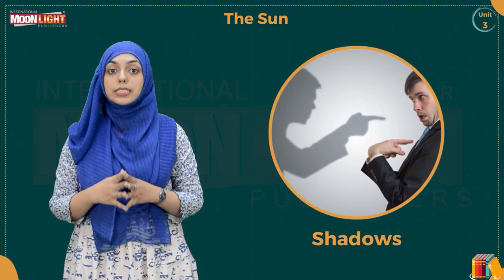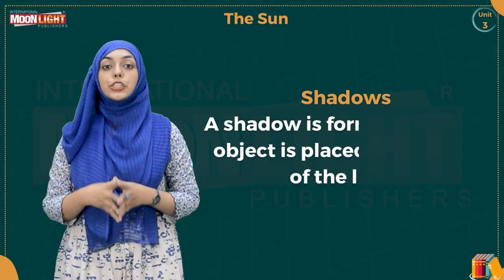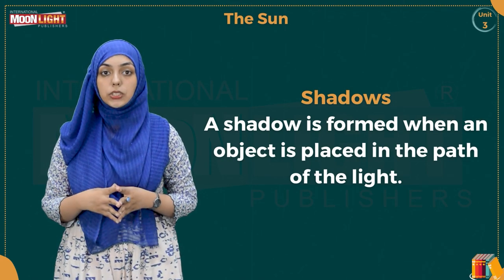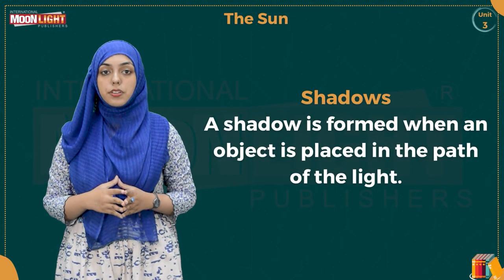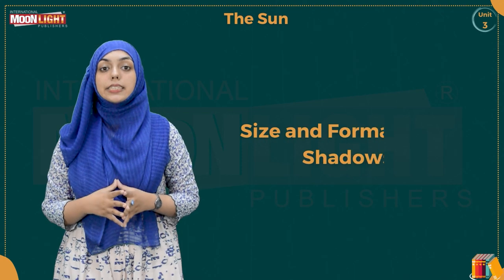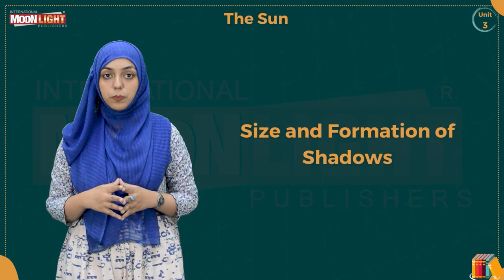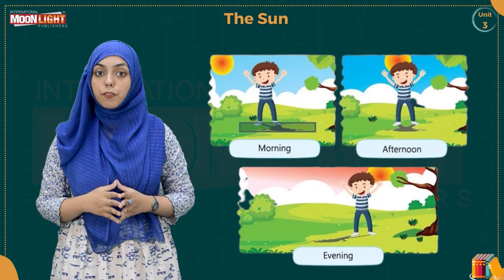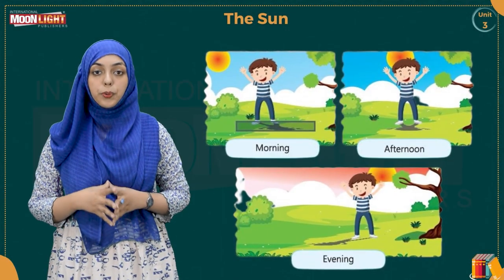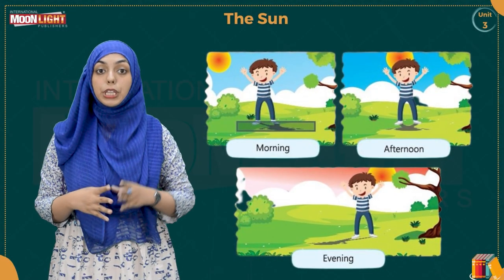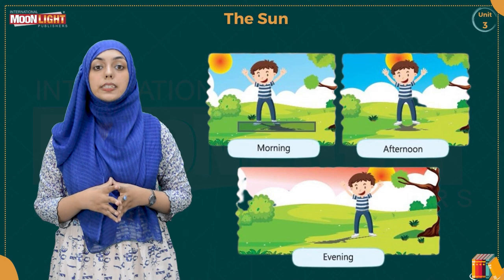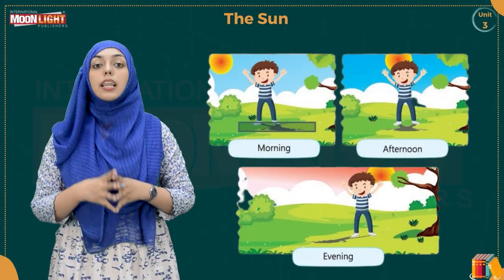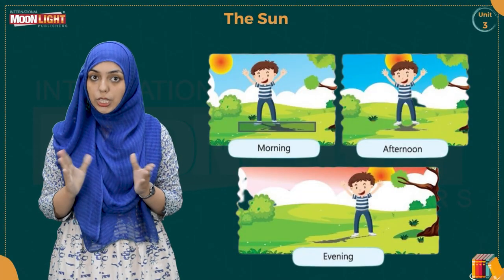I will tell you how a shadow is formed. A shadow is formed when an object is placed in the path of light. In this picture, Amjad is standing in front of the sun and his shadow is cast on the opposite side. When the sun changes its position, the length of the shadow also changes.